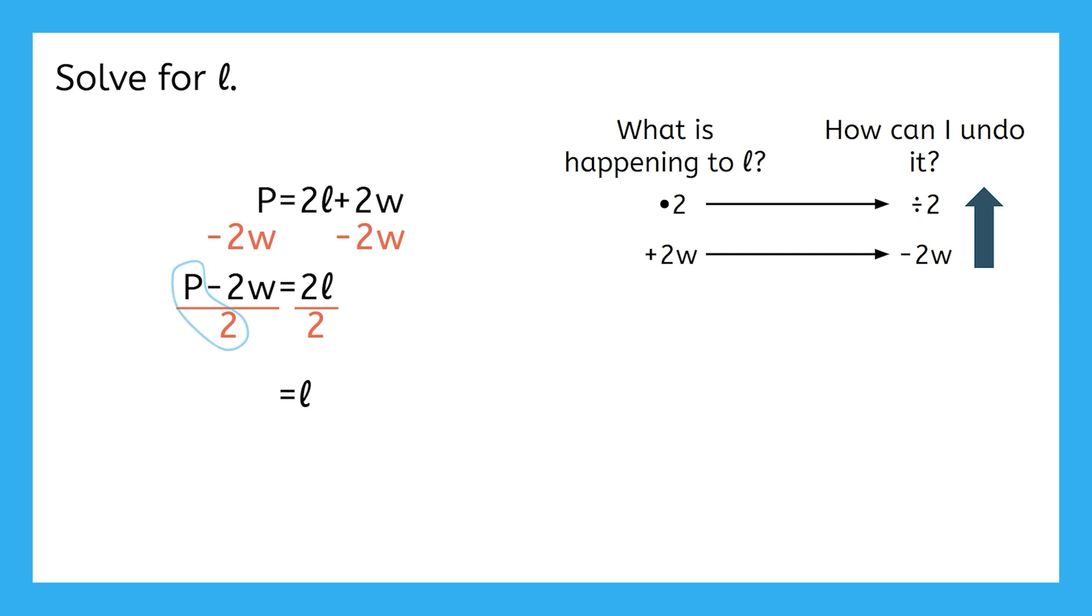We can distribute this division and actually divide each of these terms by 2. Then what will they look like? Well, P divided by 2 will just make P over 2, and negative 2W divided by 2 leaves just minus W.